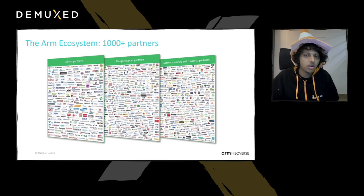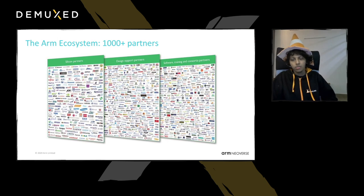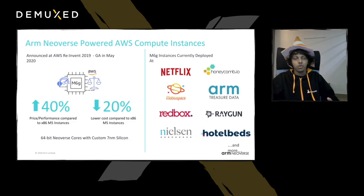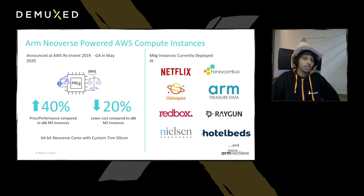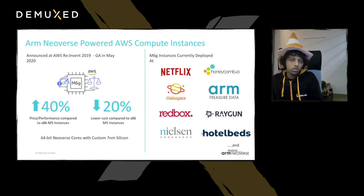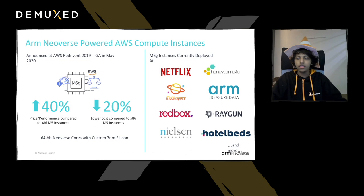The ARM ecosystem has over 1,000 partners including silicon developers, design manufacturers, software companies, and consortiums. The ARM Neoverse chipset offers around 20% lower cost compared to similar instances, and about 40% higher price-to-performance ratio. In 2020 it's already in production at Netflix, Honeycomb, and many other places.